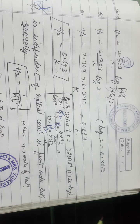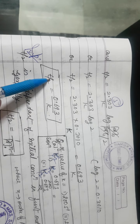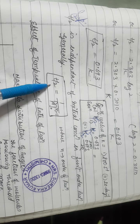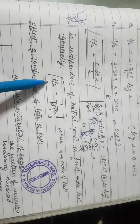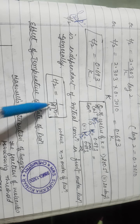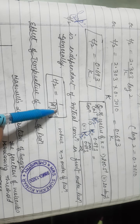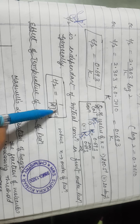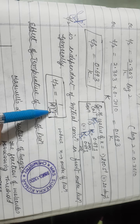Did you notice that in a first order reaction, T½ does not depend on concentration? T½ is independent of initial concentration in first order reaction — this is a very important point. The general expression for T½ with concentration is: T½ = 1/[A]^(n−1), where n is the order of reaction. For first order (n=1): [A]^0 = 1, so T½ is independent of initial concentration.